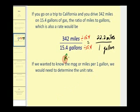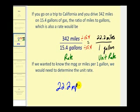So here we have our rate, and here we have our unit rate. As you know, when you see ads for cars, manufacturers usually express this unit rate as 22.2 mpg, representing the miles per one gallon.